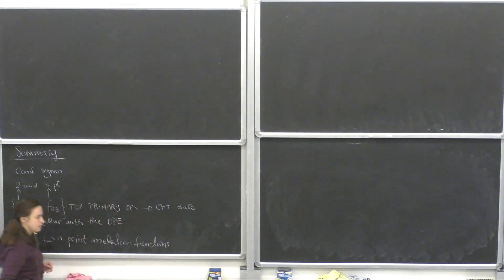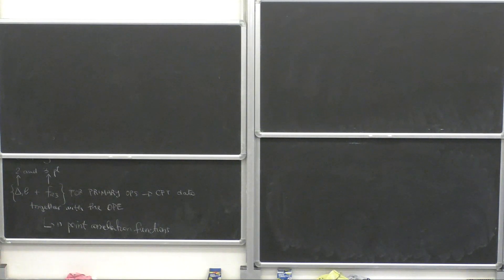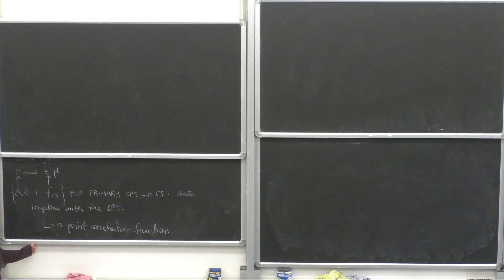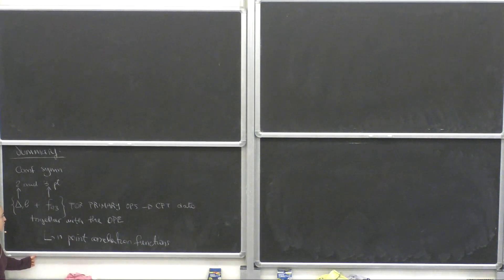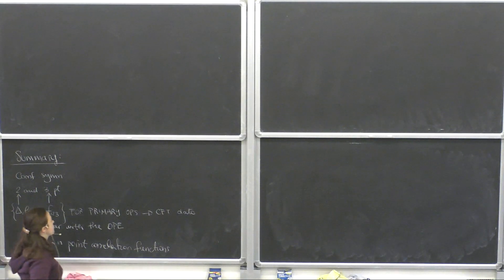As we said, this is a bit abstract and in particular it's hard to make it work because we need to know all of them. It's a bit complicated to reconstruct, say, a five or six-point function because we would need to know all the operators that appear in the CFT, which might be too much information. But that's what we discussed yesterday.